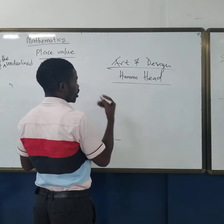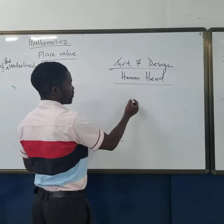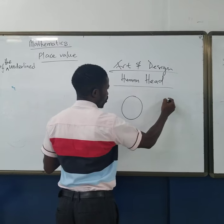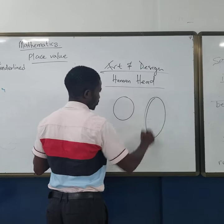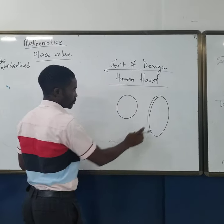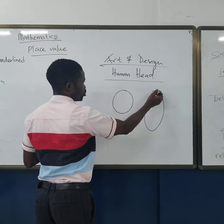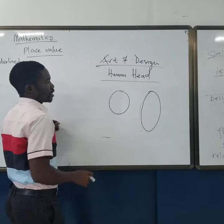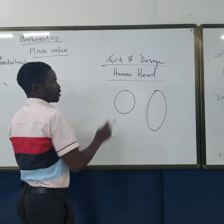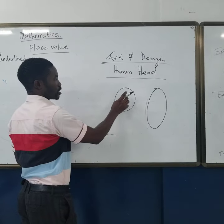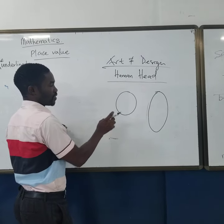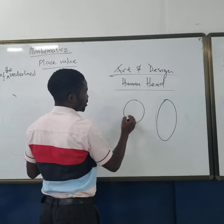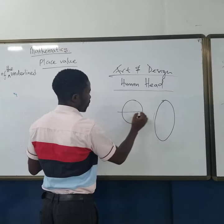By drawing the human hair, you have to draw a circle or oval. These are the two shapes that you can use to draw the human hair. I will start with the circle first because the circle is the most important and it is very easy. After drawing the circle, you divide it into two equal parts.